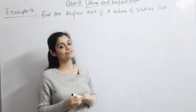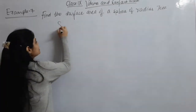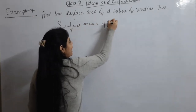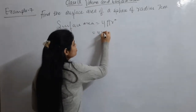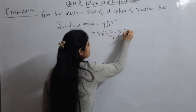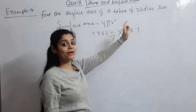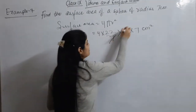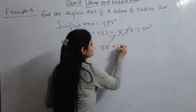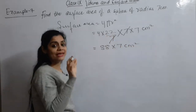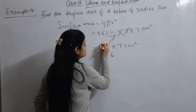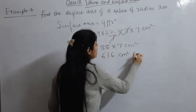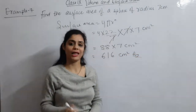Find the surface area. The formula is 4 π r². So surface area = 4 × (22/7) × 7 × 7 × 7, because radius is given as 7 cm. The 7 cancels out, giving 88 × 7 cm². Since 4 × 22 = 88, and 88 × 7 = 616, the answer is 616 cm².